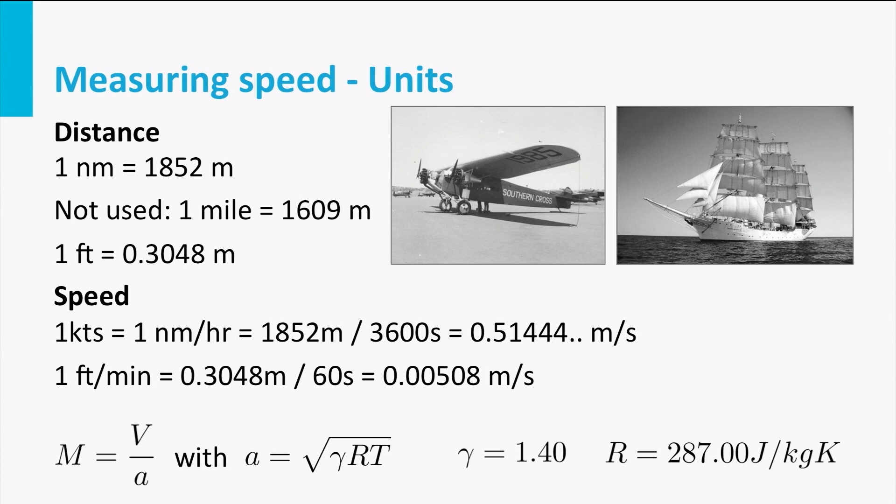We see here the formula is the square root of gamma, which is 1.4, times the specific gas constant R, 287, times the temperature in Kelvin. Using this formula will allow you to calculate the speed of sound at any altitude. Using the airspeed and dividing it by the speed of sound will give you the Mach number for this current situation.